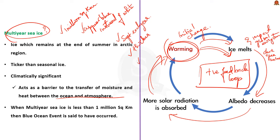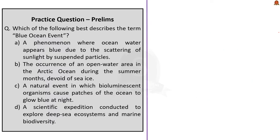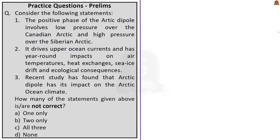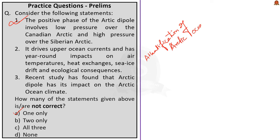Those are the key facts to recall with respect to the Blue Ocean Event. Moving on to the next question: the question asks you to find the incorrect statement. The first statement alone is incorrect; the other two statements are correct. So the correct answer is Option A — one only. This question was asked because the term 'Atlantification of the Arctic Ocean' was frequently in the news.